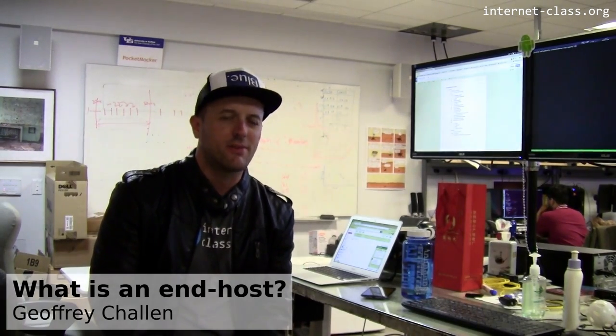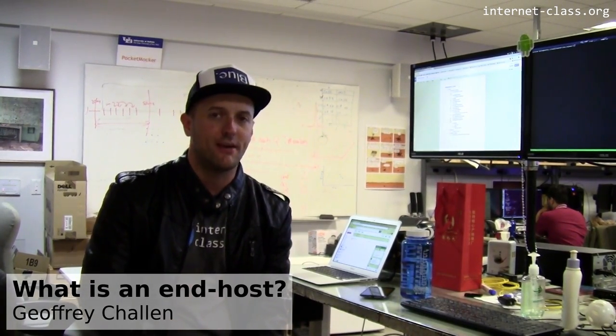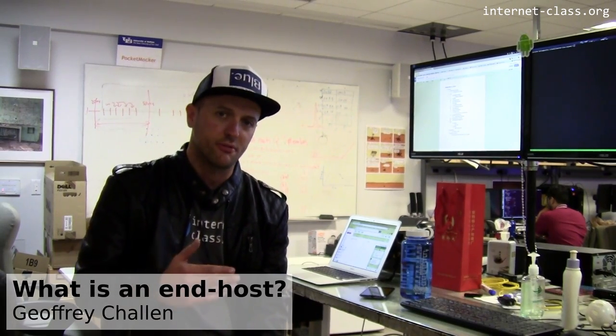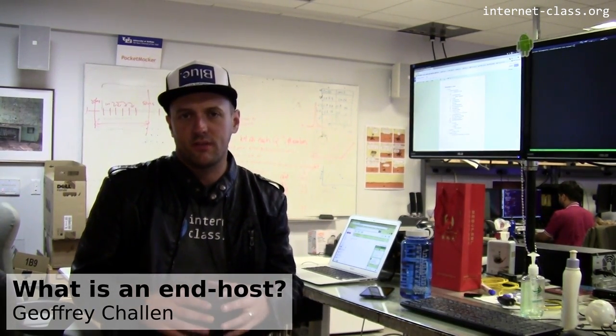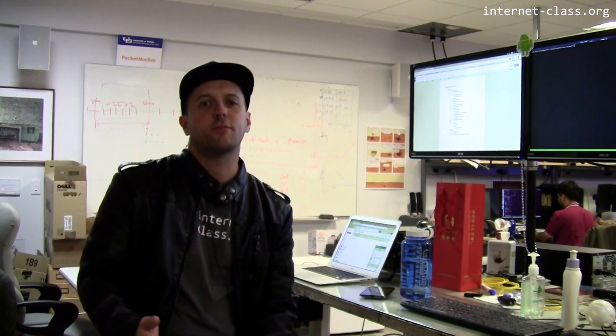Computers that are part of the internet can be divided roughly into two categories. We have end hosts and routers. End hosts exist at the periphery of the network and they don't transmit IP packets from one computer to another.